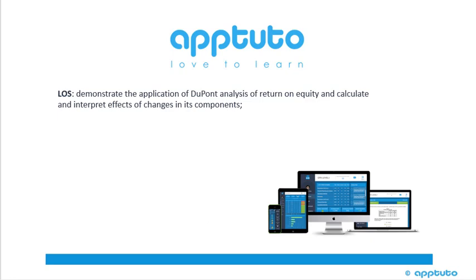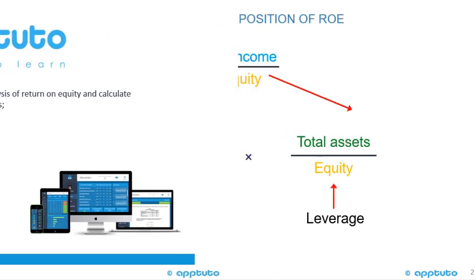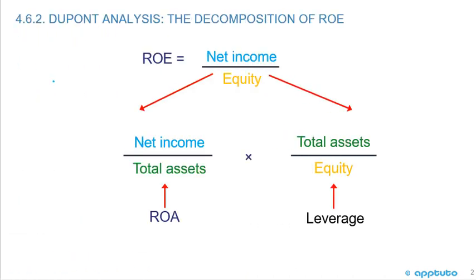This LOS demonstrates the application of DuPont analysis of return on equity and how to calculate and interpret the effects of changes in its components. DuPont analysis is the decomposition of ROE.